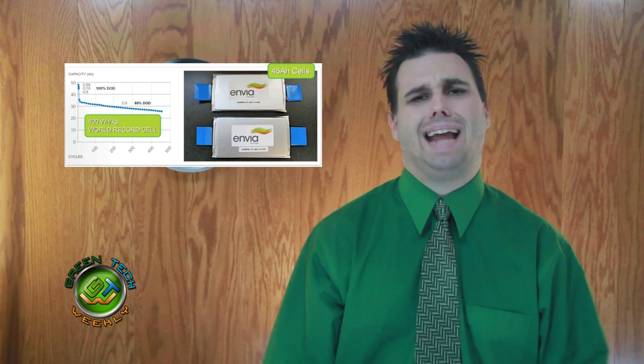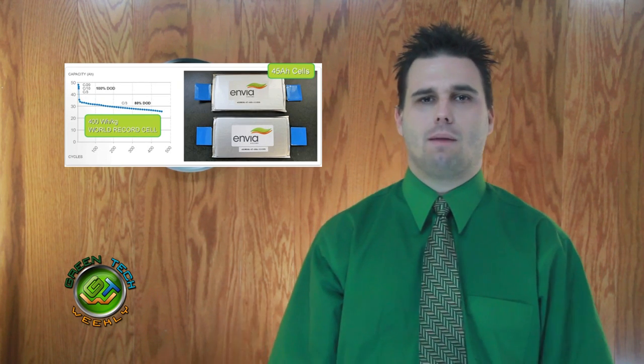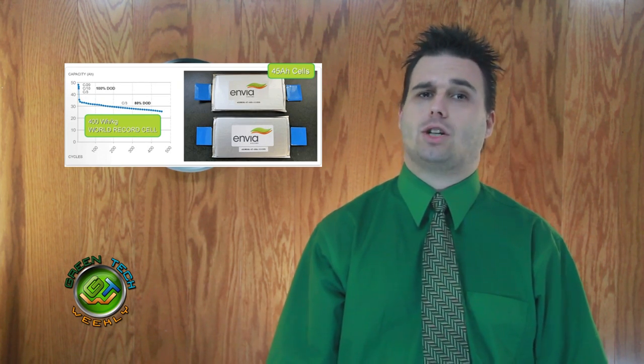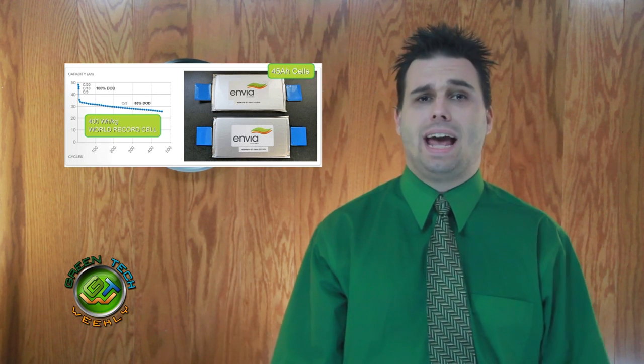This is show number 27. Let's look at all the green tech from around the web. This first story is something I want right now. Envyet Systems has come up with a way to double the capacity of an electric car battery and cut the cost in half.